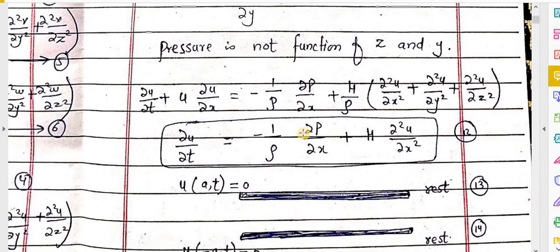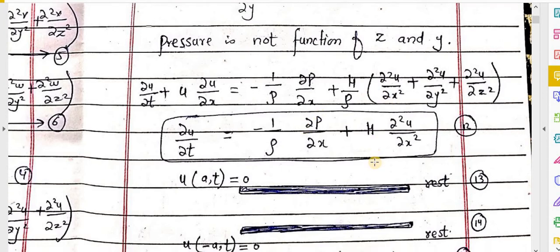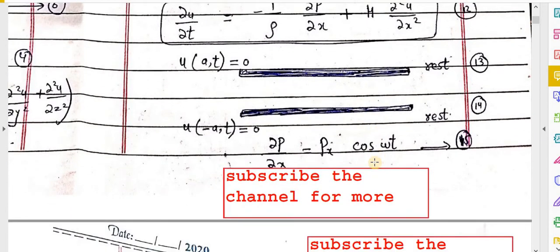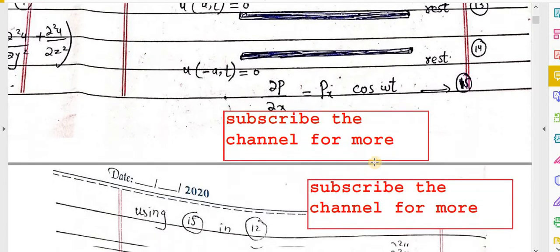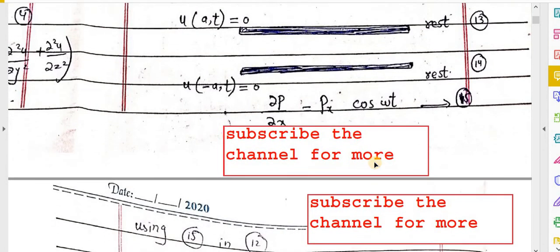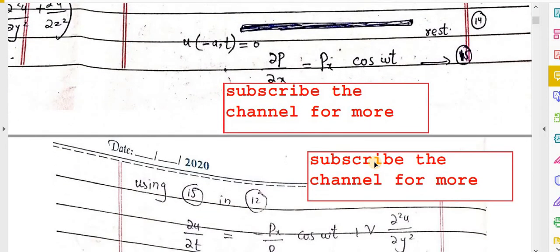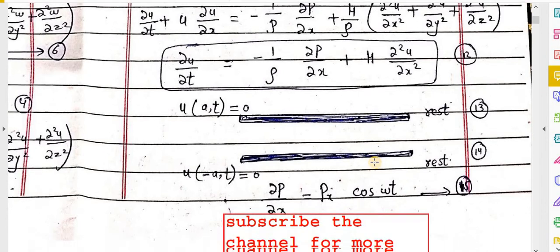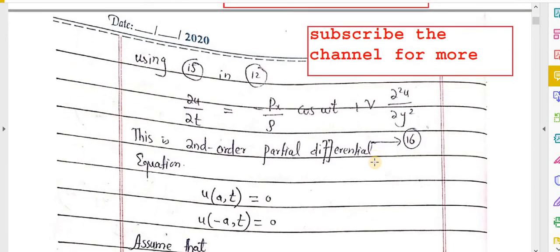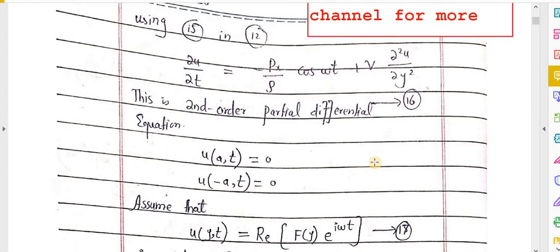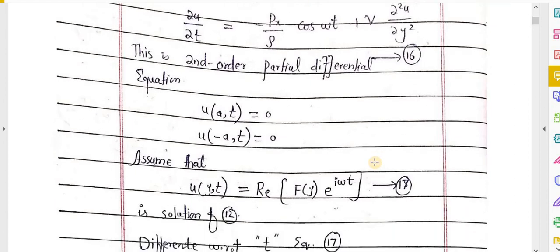After this we can write equation 12. These are our boundary conditions and initial conditions, given as equations 13 and 14. We will use these conditions, and substituting equation 15 into equation 12 gives a new equation named equation 16, which is a second-order partial differential equation.